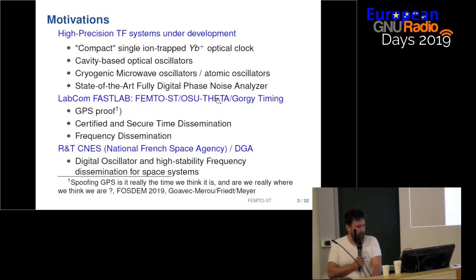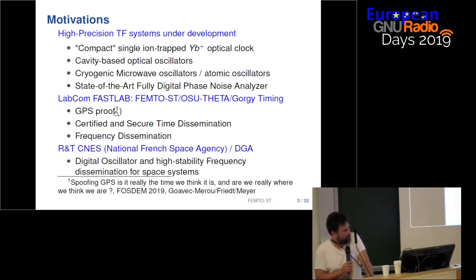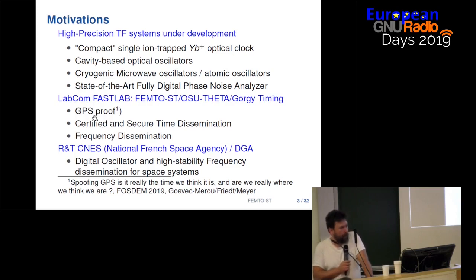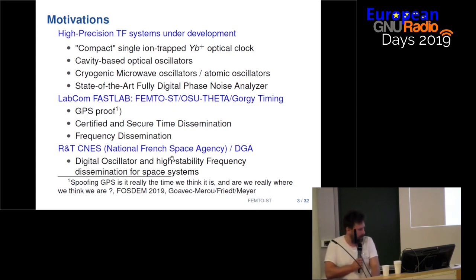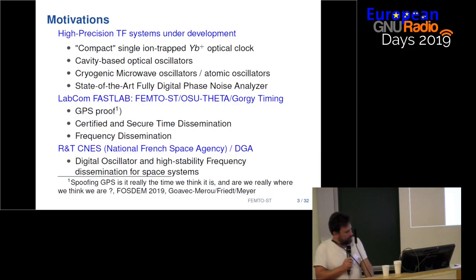There is a LabCom with the company Gorgie Timing and with the Observatory of Besançon, which targets disseminating time to clients in a certified manner. Recently, GNSS shows that it's not that hard to spoof at least the GPS. We also have projects with CNES, which is the National French Space Agency, and with DGIA, which is kind of the army, to look at digital oscillation and high frequency stability for space systems.